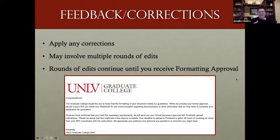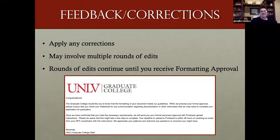Once you get the checklist back, you'll review it alongside your document and make any corrections. You might set up an office hours appointment if you're not sure how to fix something. This might be one round of edits or two or three, depending mostly on how close your document is to being ready when we receive it. Once you go through your rounds of edits, you'll receive a format approval email — congratulations, one more thing checked off the list.